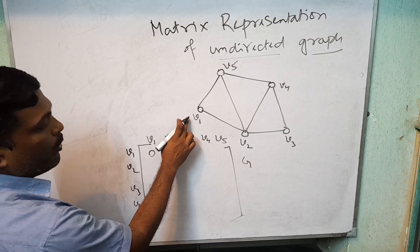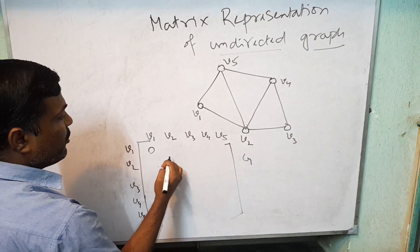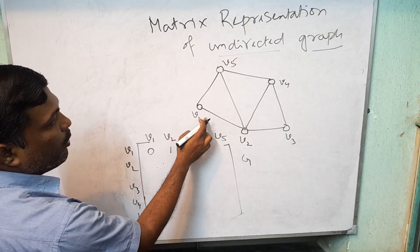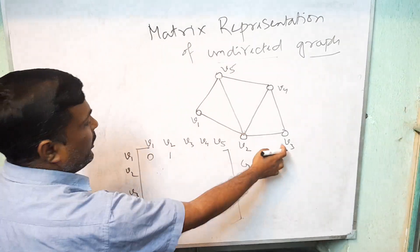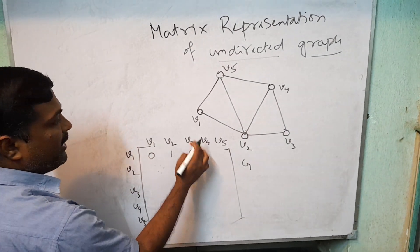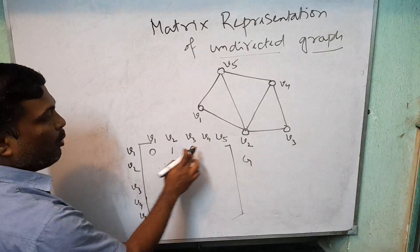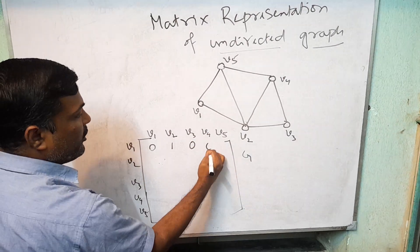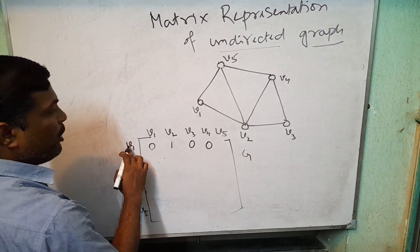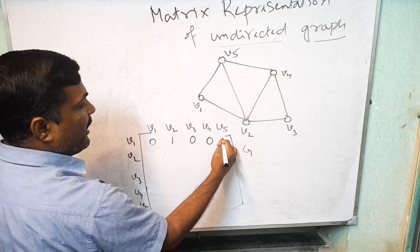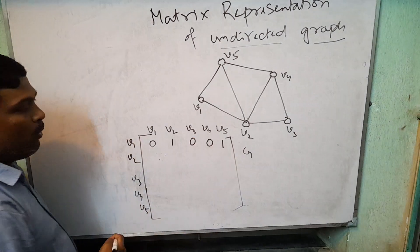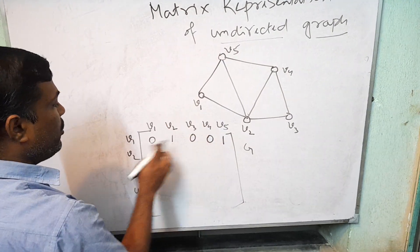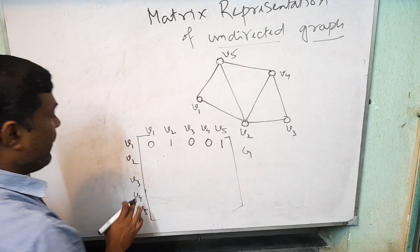V1 to V2: we have one edge, so write 1. V1 to V3: no edge between V1 and V3, so 0. V1 to V4: there is no edge, so 0. V1 to V5: one edge, so write 1. There is an edge between V1 and V5, so this element is 1.